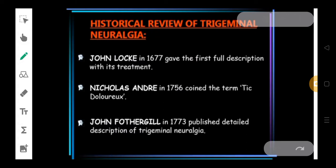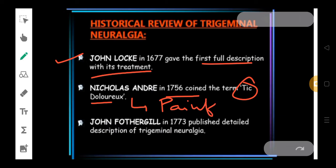If we come to the historical review of trigeminal neuralgia, it was first introduced by John Locke in 1677. He gave the first full description about this disease with its treatment. Then, Nicholas Andre in 1756 coined the term Tic Douloureux. What do you mean by Tic Douloureux? This basically means painful jerks.